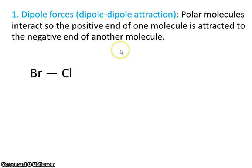Let's look at bromine monochloride as an example. Bromine monochloride is used, I believe, as an industrial disinfectant.